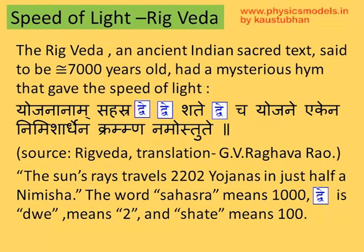If you look into the stanza itself, the word 'sahasra' means thousand, and the word in blue and white is 'dwe', that's two. So, thousand into two is two thousand. Then we have another 'dwe' and a 'shate', that's two into hundred, and then one more two. So, two thousand, two hundred and two.